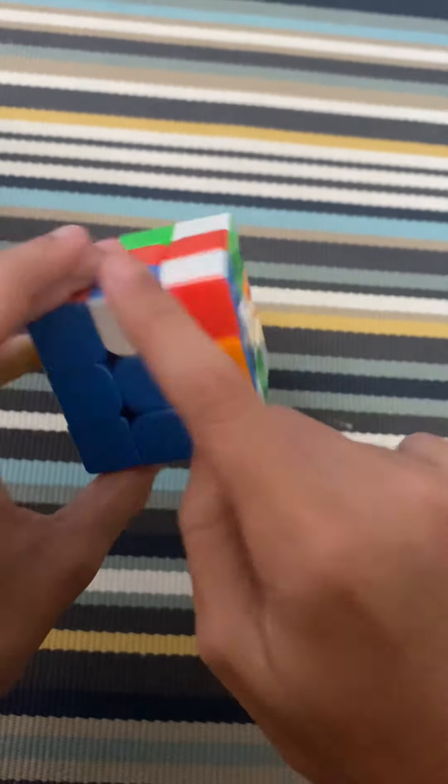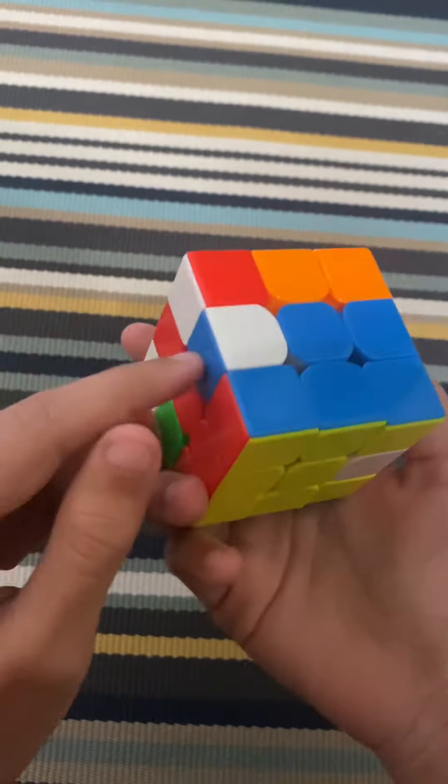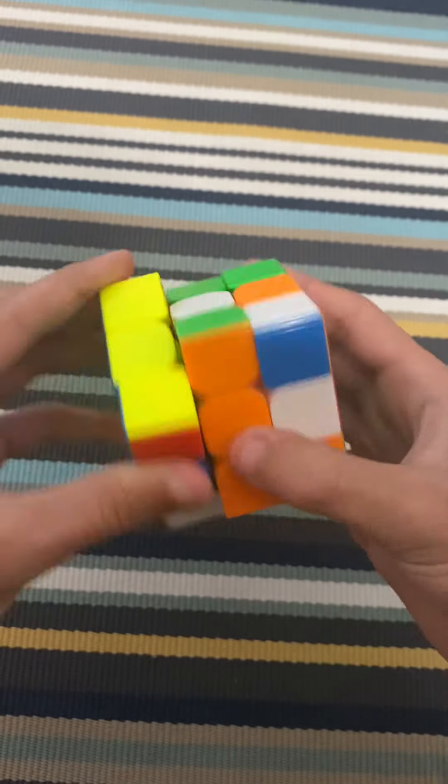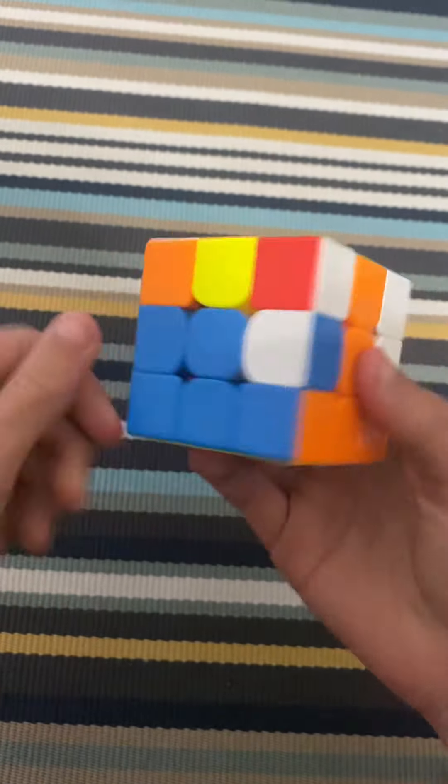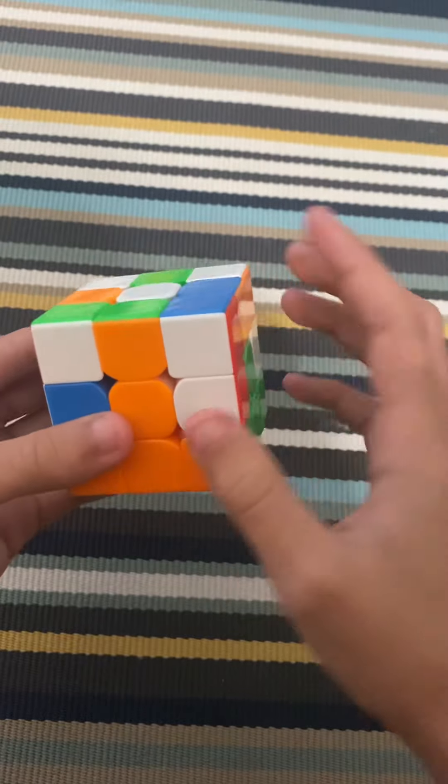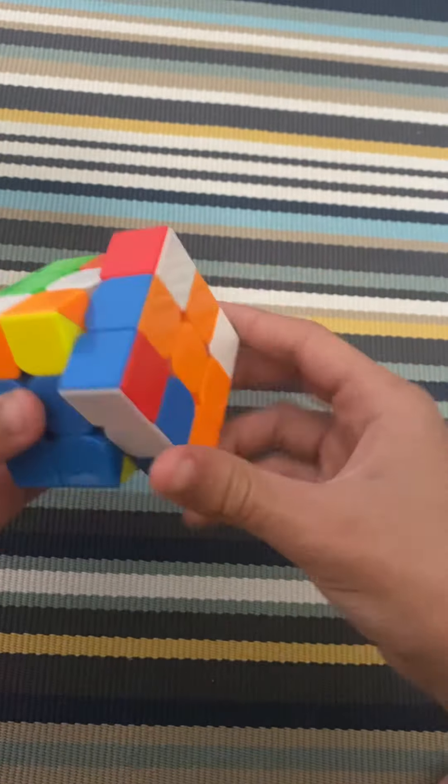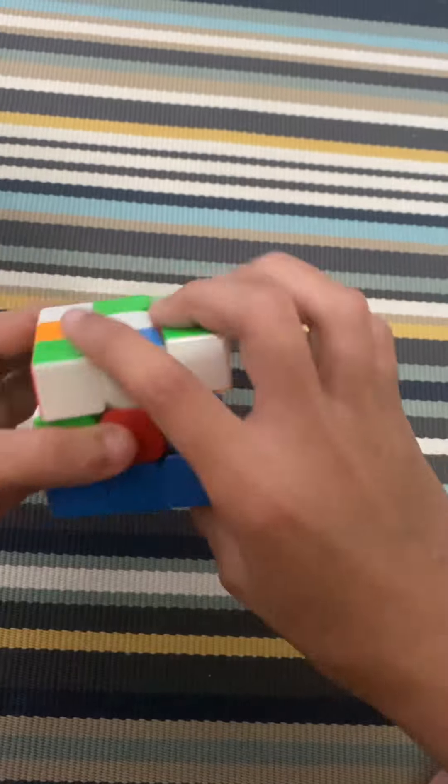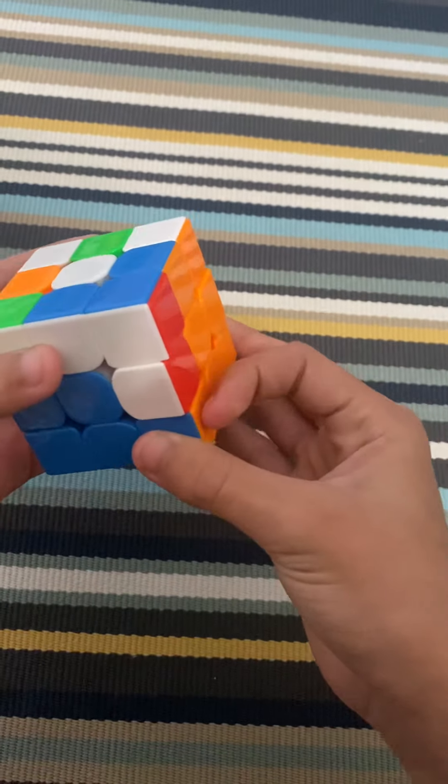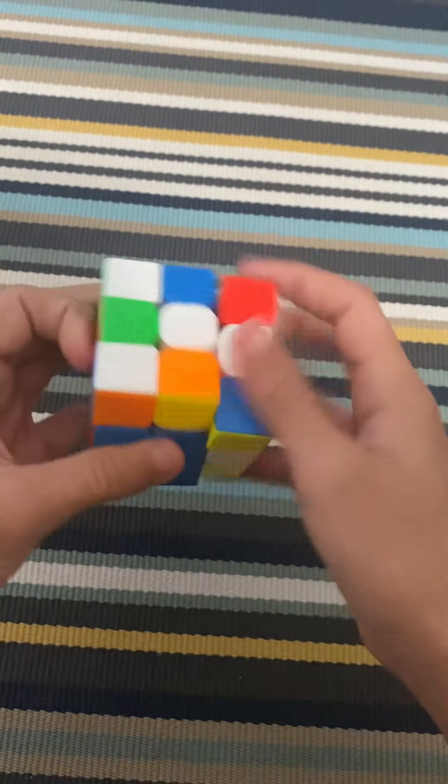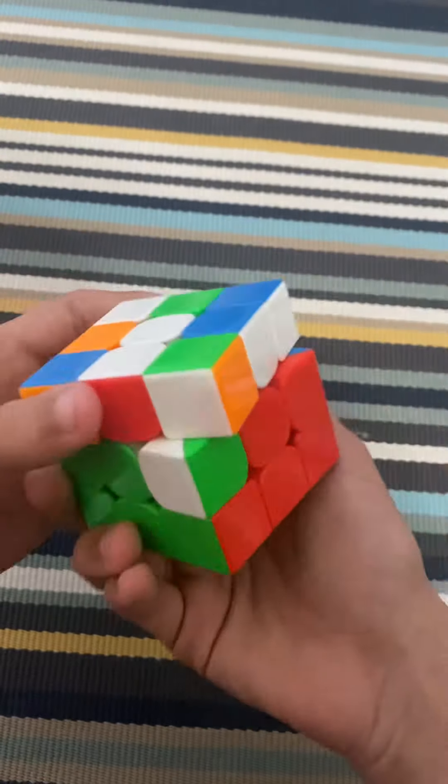Now we have this edge that needs to go here for example, so we just do this so that it inserts there. And then we need to get this over here, so we would insert the edge, do this and do the reverse and move it back. The same thing here, instead we do this.